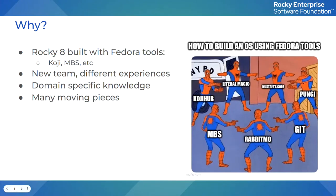Almost all of us had never really touched Koji before. We'd heard about modularity because we were using it, but didn't really have much of an idea of how module builds or MBS worked, how to invoke those builds, how to compose Fedora releases, how to compose Red Hat releases — all of these sorts of things. We had no idea about.